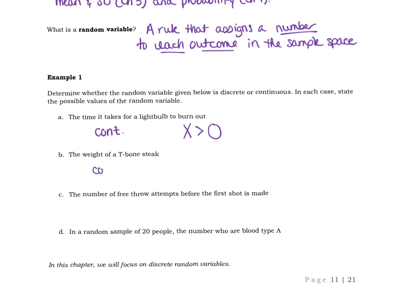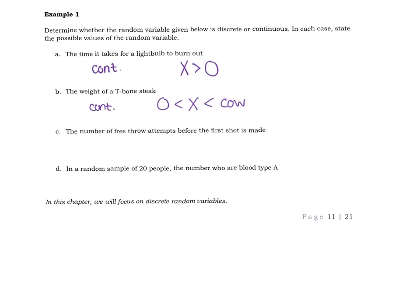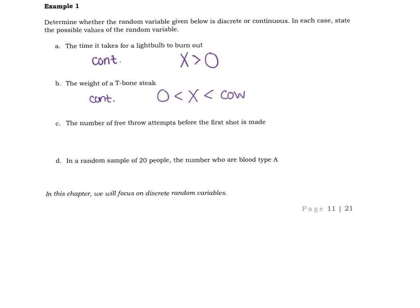All right, B, the weight of a T-bone steak. So weights are also continuous, because we can get those down to pounds and ounces and portions of ounces, et cetera. So what are the different weights that could happen? Well, obviously, the weight of your steak has to be bigger than zero. But there is an upper limit on that. The upper limit is whatever your cow is. You can't have a T-bone steak weigh more than the cow. Probably less than the cow itself, the bones, and so forth. But we'll get a little tongue-in-cheek there and make it the cow.